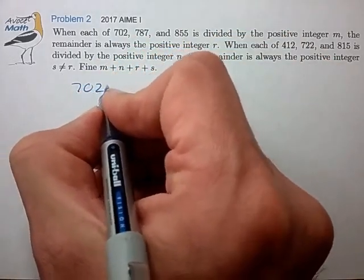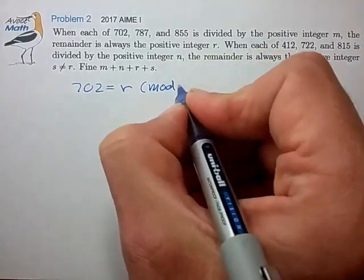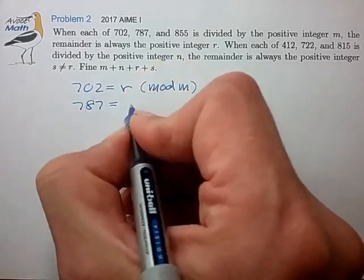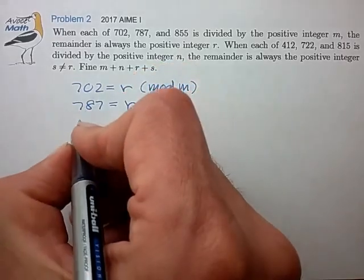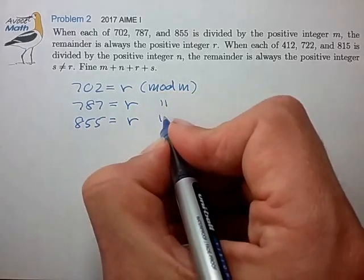787 is also equal to r mod m. 855 is equal to r mod m.